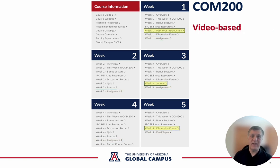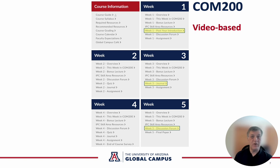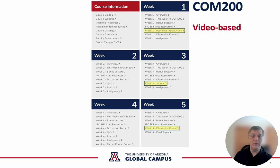There are video-based assignments in COM 200 in weeks one, three, and five. In week one, you start off on day one in the Post Your Introduction by recording a short video introducing yourself. In week three, your journal entry for that week is a video-based journal, meaning you'll need to outline what you want to present on camera and record your video, submitting both your outline and your video recording. In week five, you will do a presentation based on your skills improvement plan, presenting how you did and what you learned from the experience to your classmates. The week three video journal is only seen by your instructor and yourself. The weeks one and five videos are viewable by all of your classmates.